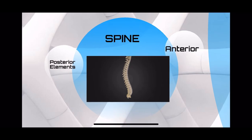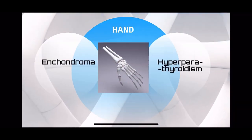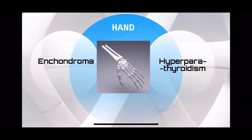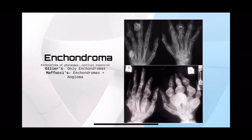So spine is easy. If you get a hand X-ray, that should make you think of enchondroma or hyperparathyroidism. Hyperparathyroidism is something you can diagnose based on history and lab investigations. With enchondroma, you can see clearly how the cortices of the phalanges are expanded. Enchondroma can be multiple, as shown here in the X-ray, or it can be single. Ollier's disease and Maffucci syndrome are associated with multiple enchondromas.